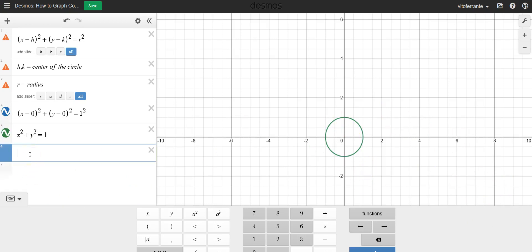Now remember, concentric circles are circles that have the same center. But their circumference or their radius is different. So let's go ahead and continue to use this formula.